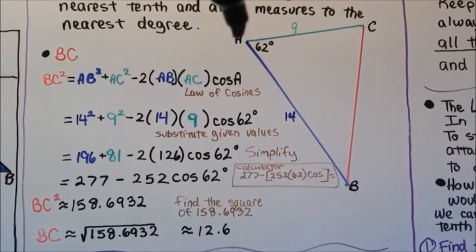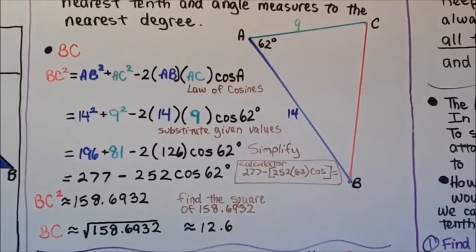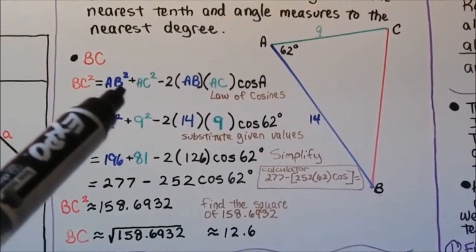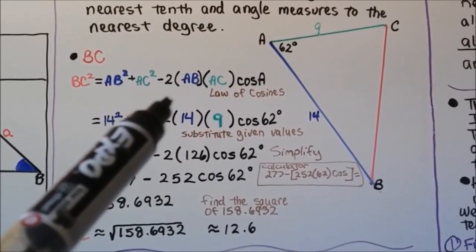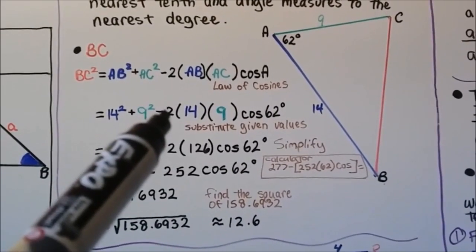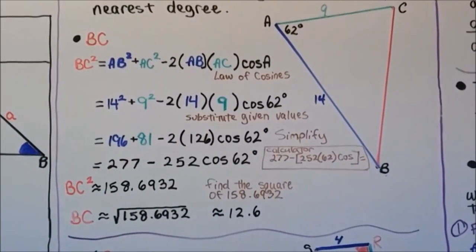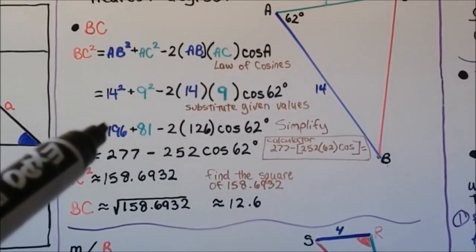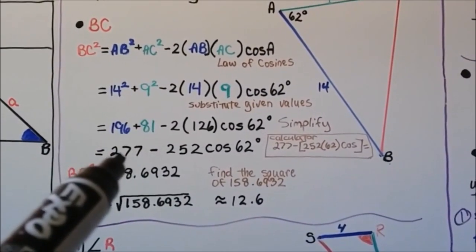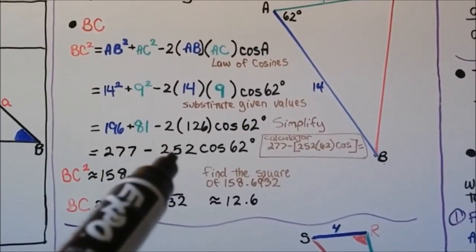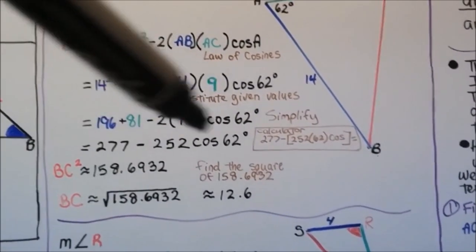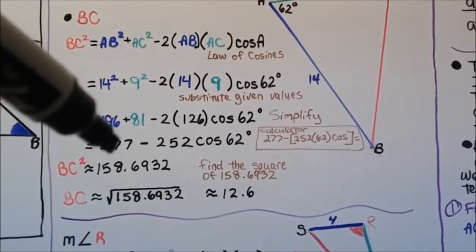Looking at the diagram, AC is 9, angle A is 62 degrees, and AB is 14. Using the law of cosines: BC squared equals AB squared plus AC squared minus 2 times AB times AC cosine of A. Substituting: 14 squared plus 9 squared minus 2 times 14 times 9 cosine of 62. That gives 196 plus 81 minus 252 cosine of 62, which equals 277 minus 252 cosine of 62, giving approximately 158.6932.